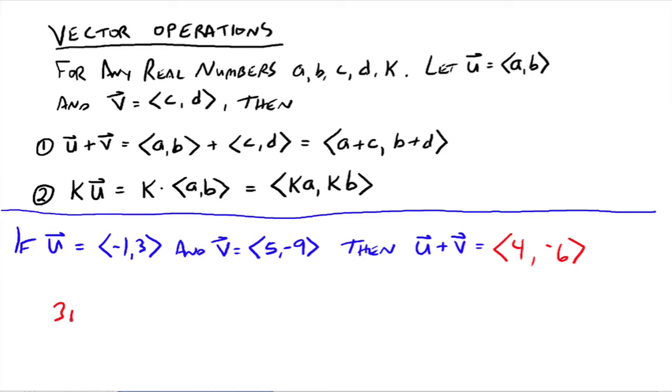What about, say, 3u minus 2v? Everybody do that one real quick. All right, so that's equal to negative 3, 9, minus 10, negative 18. And so when you subtract those together, you get negative 3 minus 10 would be negative 13, and 9 minus negative 18 would be 27. And that would be your vector.